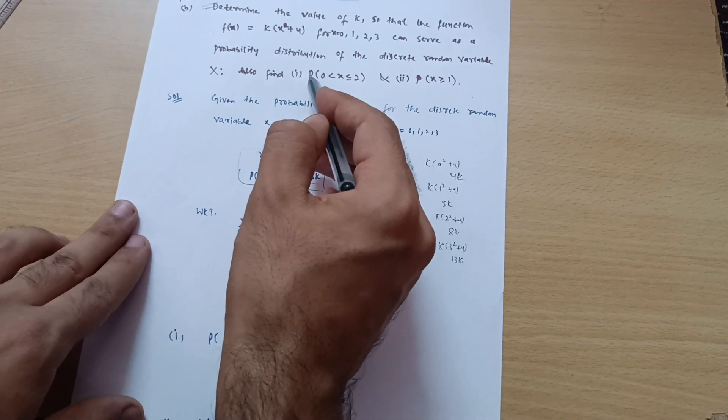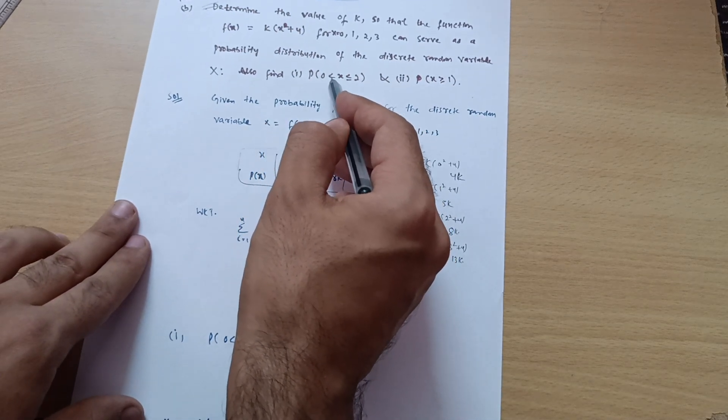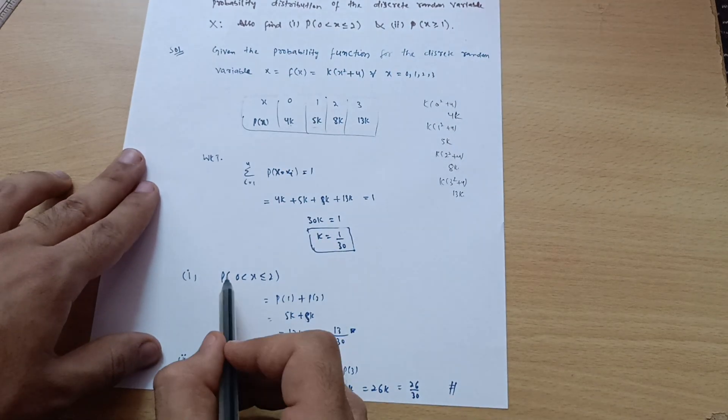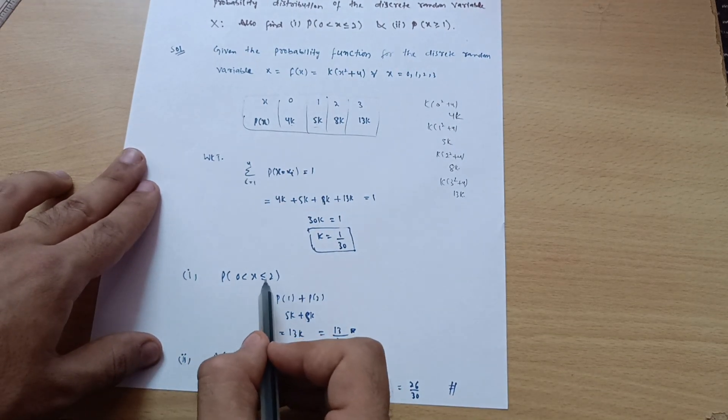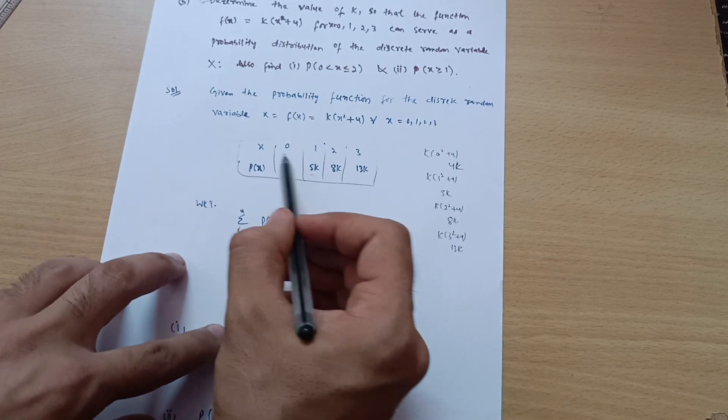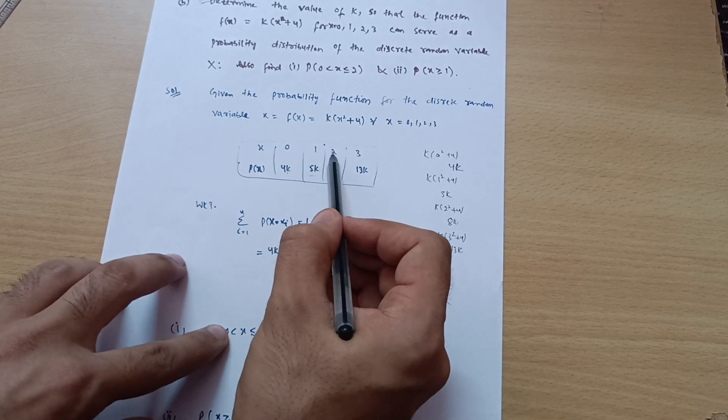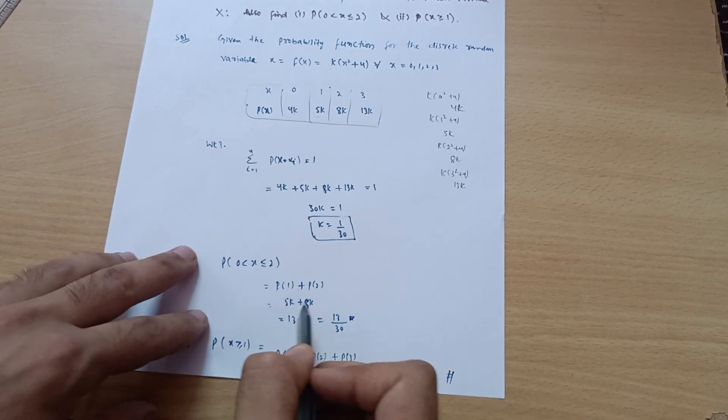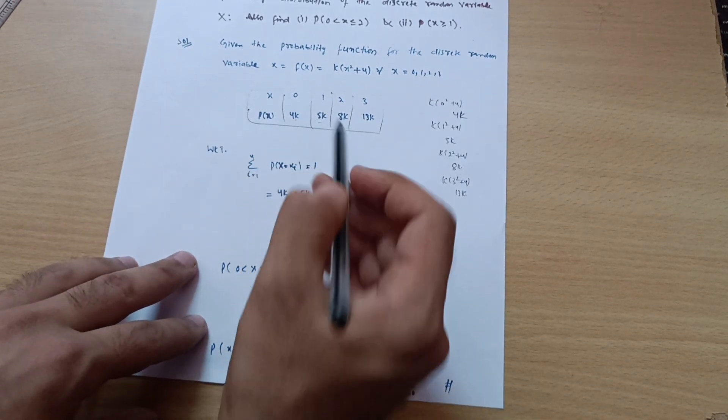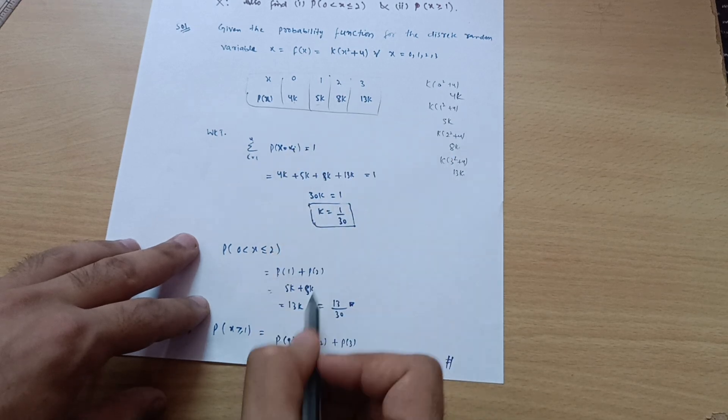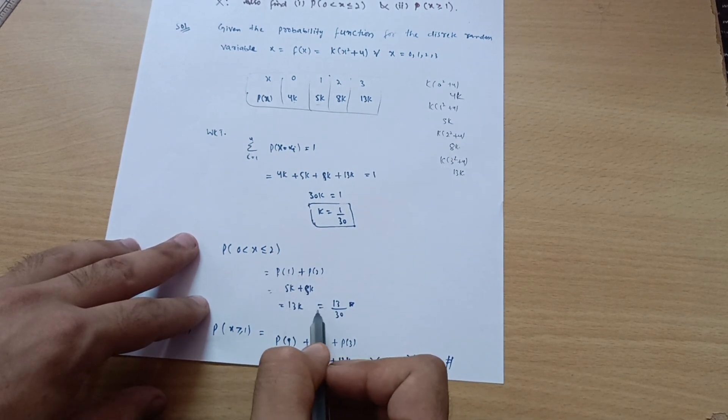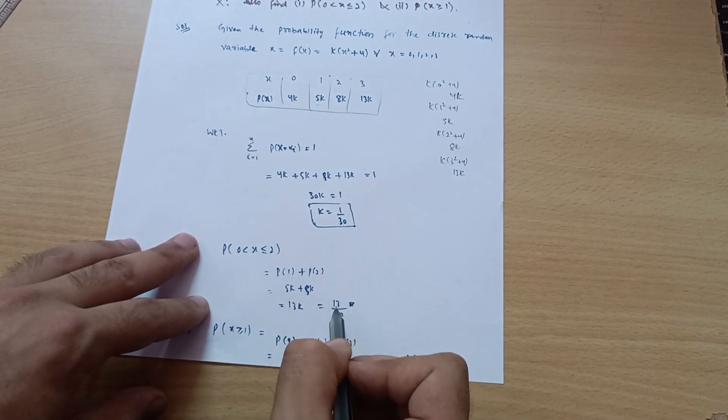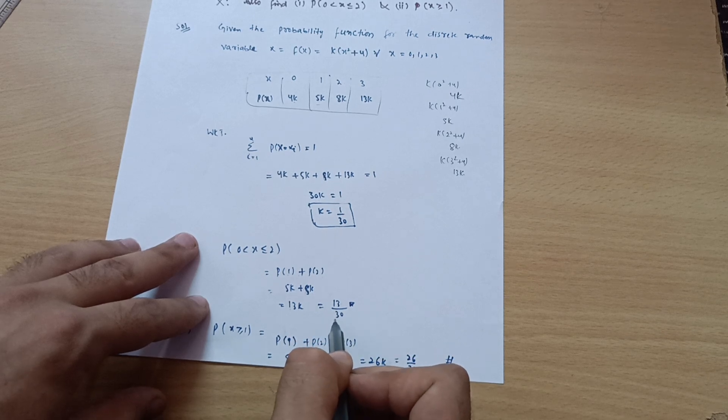Now second part is P(0 < x ≤ 2). What is greater than x value? 1 and 2. So I can take probability of 1 plus probability of 2. Probability of 1 is 5k plus probability of 2 is 8k, so that is 13k. Since k = 1/30, it will become 13/30.